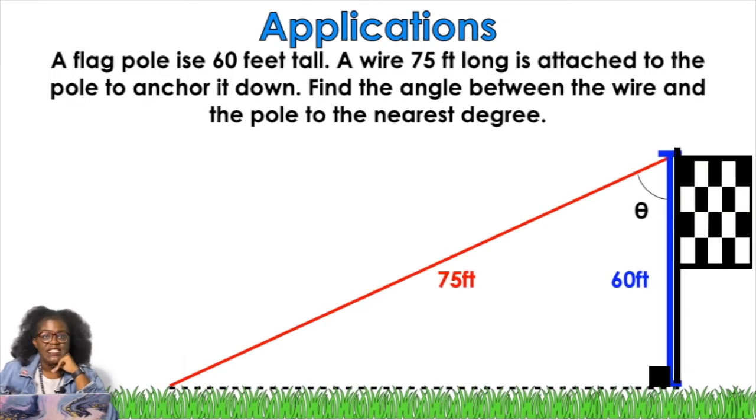A flagpole is 60 feet tall. A wire, 75 feet long, is attached to the pole to anchor it down. Find the angle between the wire and the pole to the nearest degree. So we're finding an angle again. But we're deciding what trig function we're going to use. So the wire is 75 feet. According to theta, what is 75? Is it the opposite, adjacent, or hypotenuse? Hypotenuse. Good job. And the 60, opposite, adjacent, or hypotenuse? Adjacent! So what we're going to do is we are going to decide what function that is. So I need a trig function that has the adjacent side and the hypotenuse. Is that SOH, KAH, or TOA?